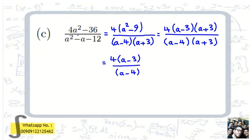Part c: 4a squared minus 36, all over a squared minus a minus 12. We factor out 4 in the numerator: 4 times (a squared minus 9), since 36 divided by 4 is 9 — again a difference of squares. Now let's focus on the denominator: a squared minus a minus 12. We look for two numbers in the form (a plus ?)(a plus ?).